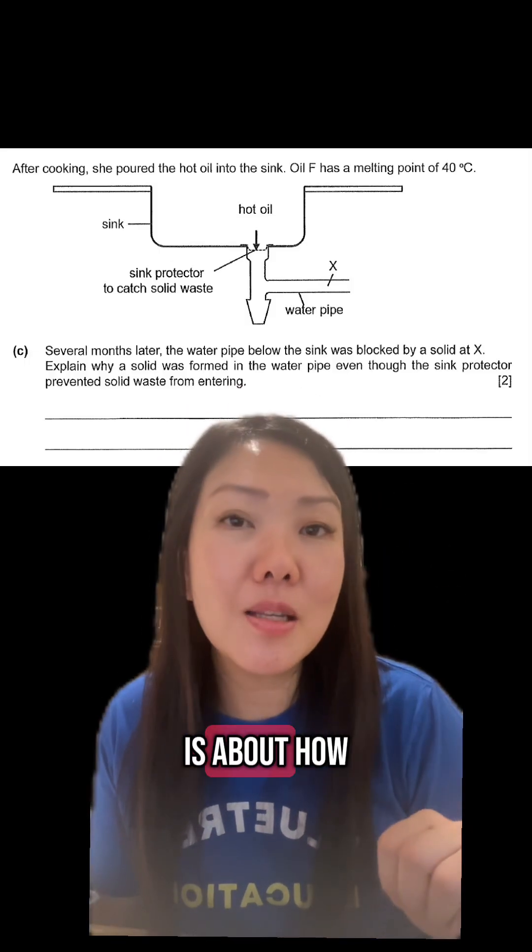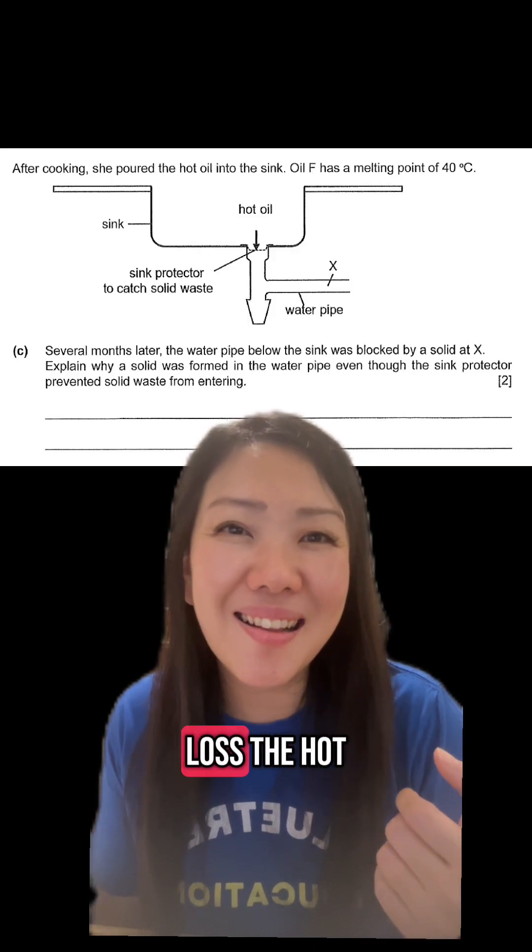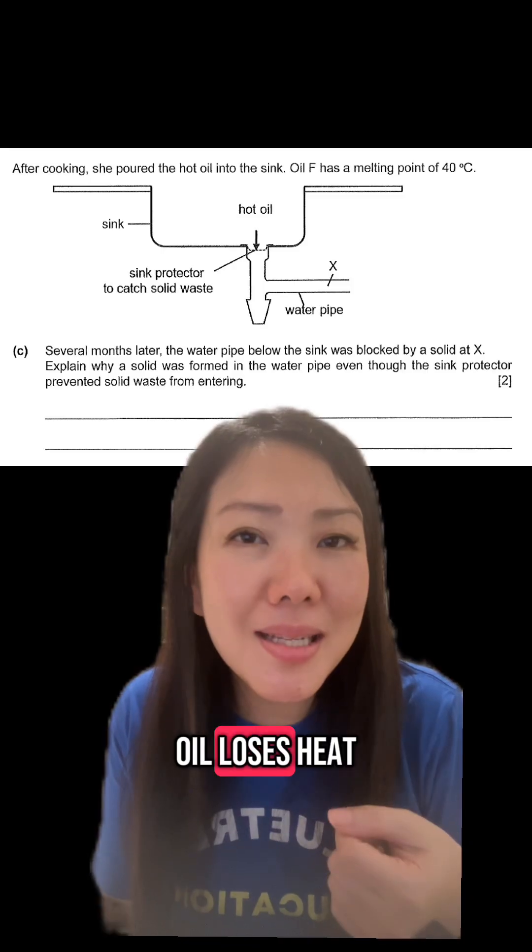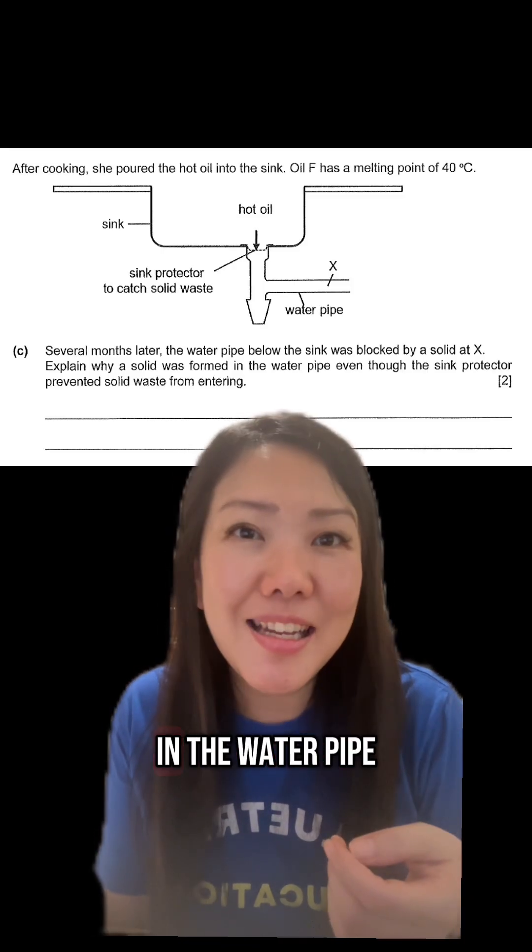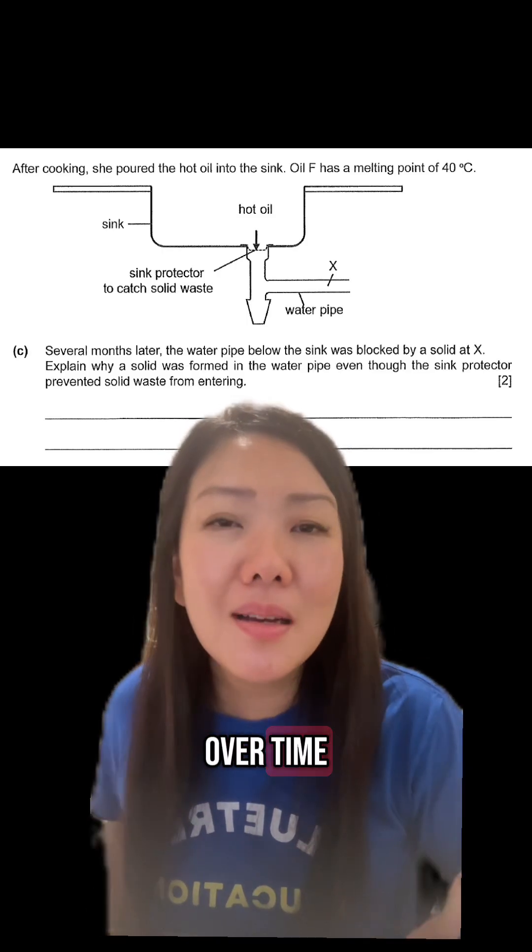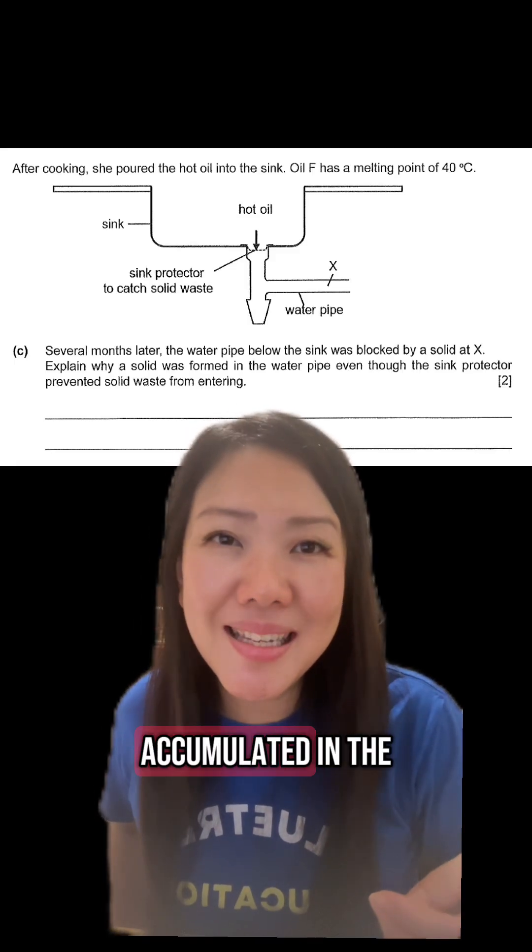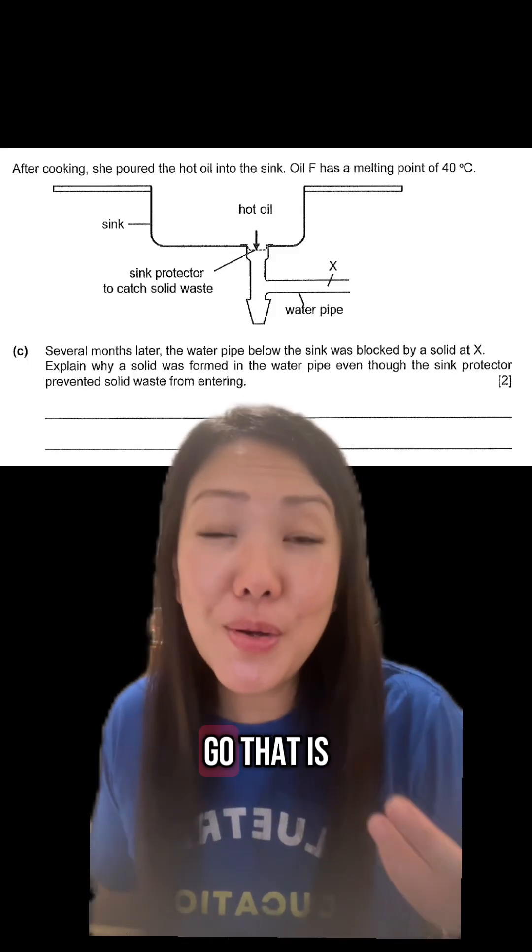The second part is about how the solid waste is formed and as we all know, it's about heat loss. The hot oil loses heat to the water in the water pipe and changes its state to solid waste. Over time, more solid waste was formed and accumulated in the water pipe.